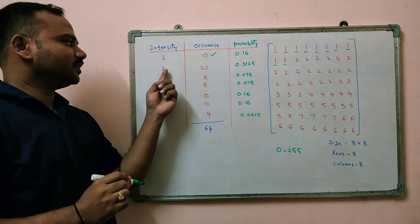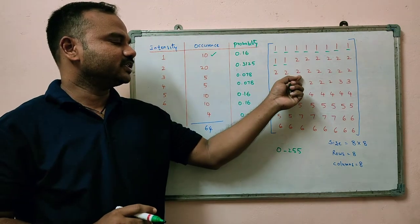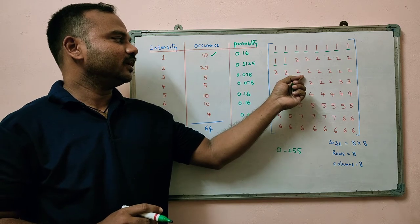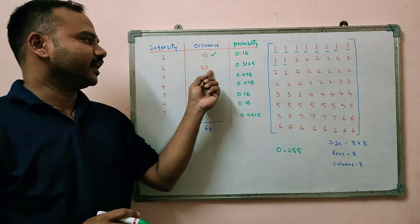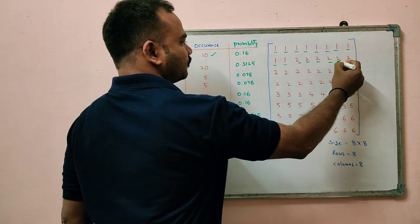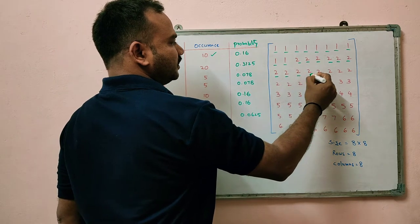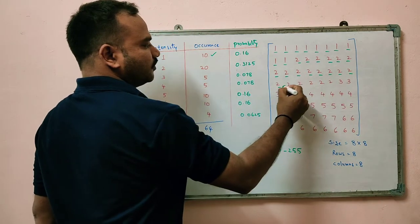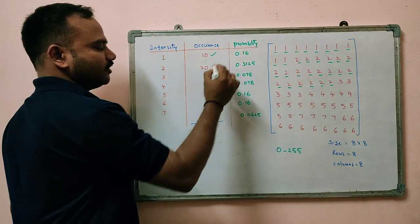Next, intensity value is 2. The number of times intensity value 2 is occurring is 20 times. So here it is 1, 2, 3, 4, 5, 6, 7, 8, 9, 10, 11, 12, 13, 14, 15, 16, 17, 18, 19 and 20. So this is 20.